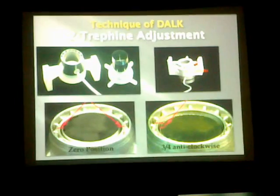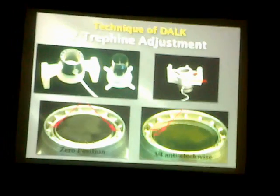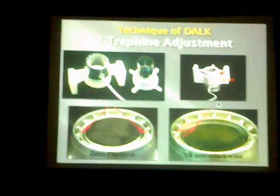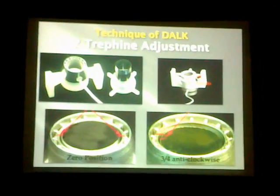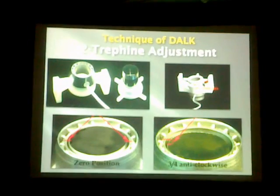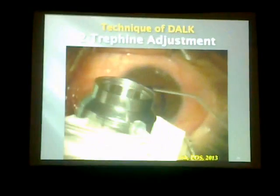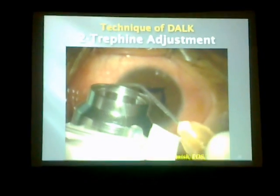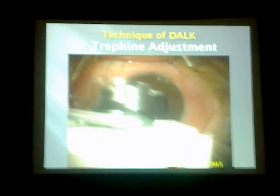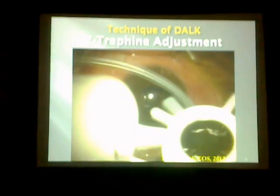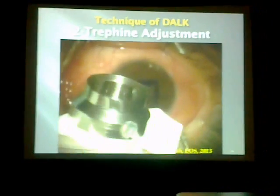The second step of DALK is trephine adjustment. You have to be familiar with your suction trephine and with the zero position of the trephine blade. Every turn of the blade makes a 60-micron cut in the cornea. You have to adjust the trephine before applying it to the patient, to have a guarded cut and achieve a partial thickness trephination.